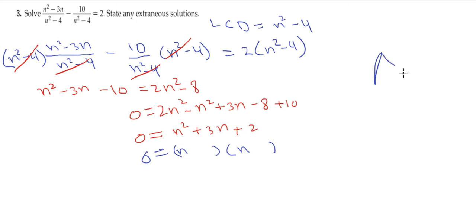We need two numbers whose product is 2 and sum is 3. 2 times 1 is 2, and 2 plus 1 is 3. In multiplication we get 2, in addition we get 3. So I write (n + 2)(n + 1).